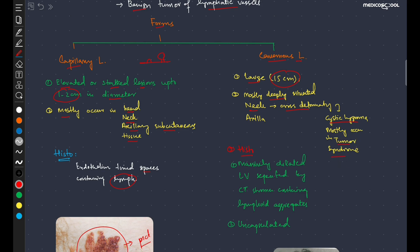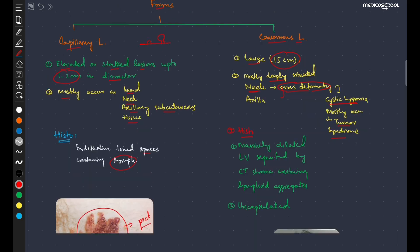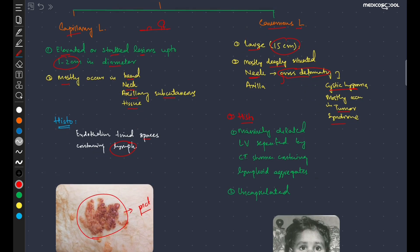It is mostly situated deeply, for example in the neck where it can cause gross deformity. Cystic hygroma mostly occurs in Turner syndrome. Histopathologically we can see...